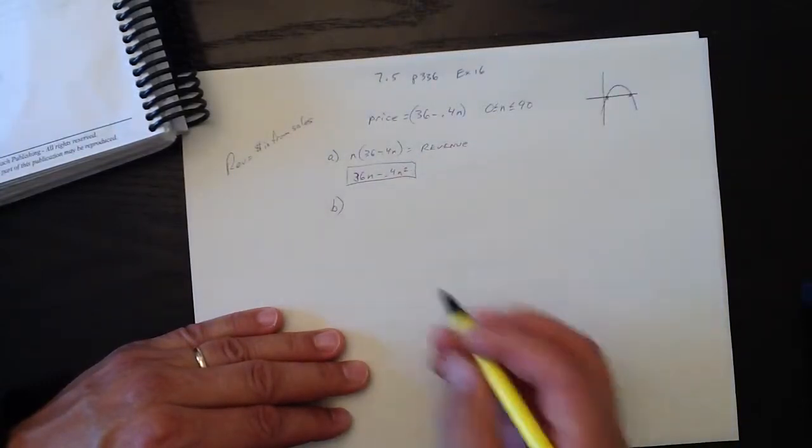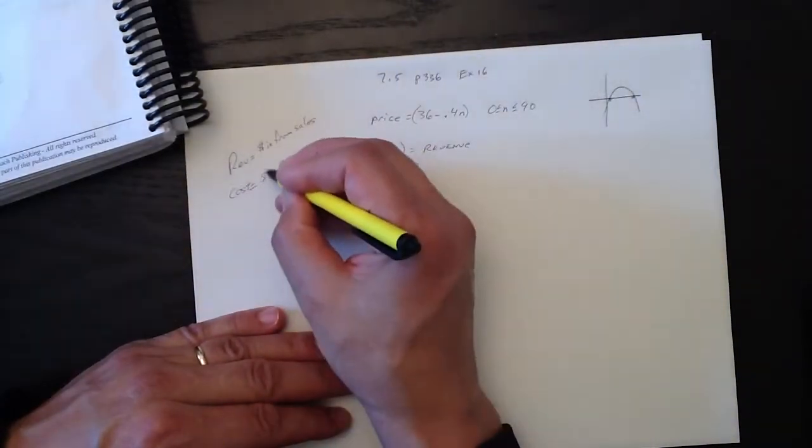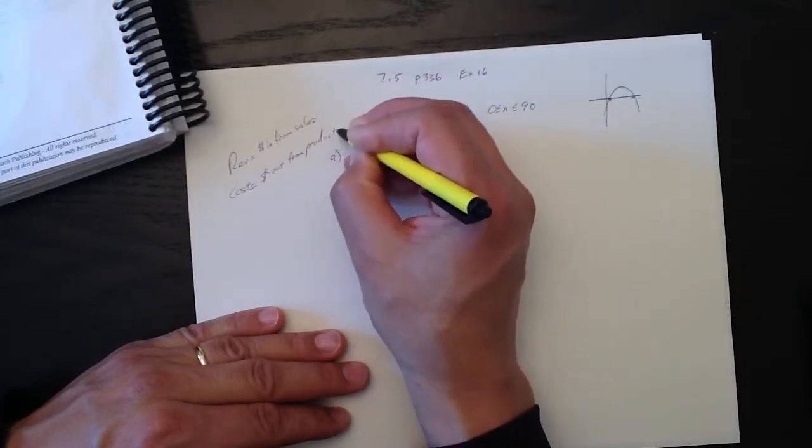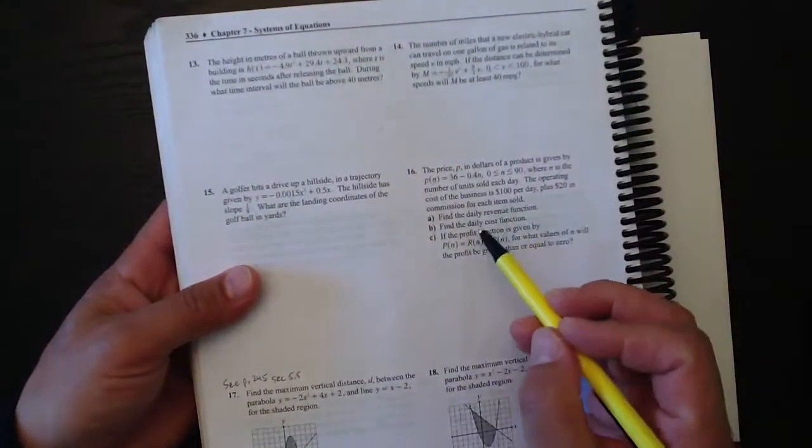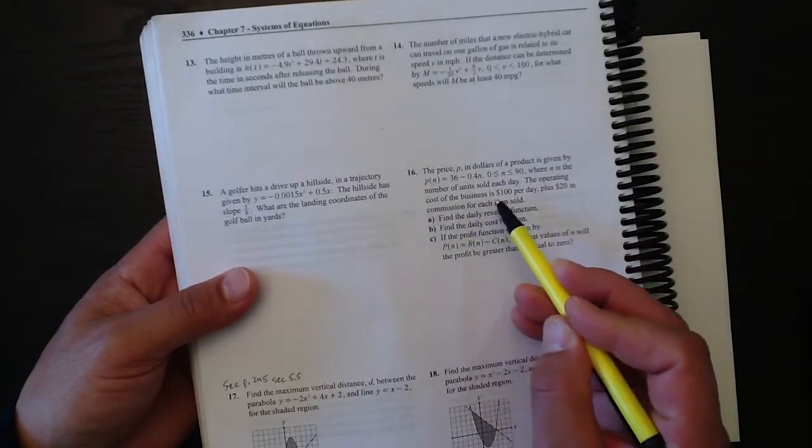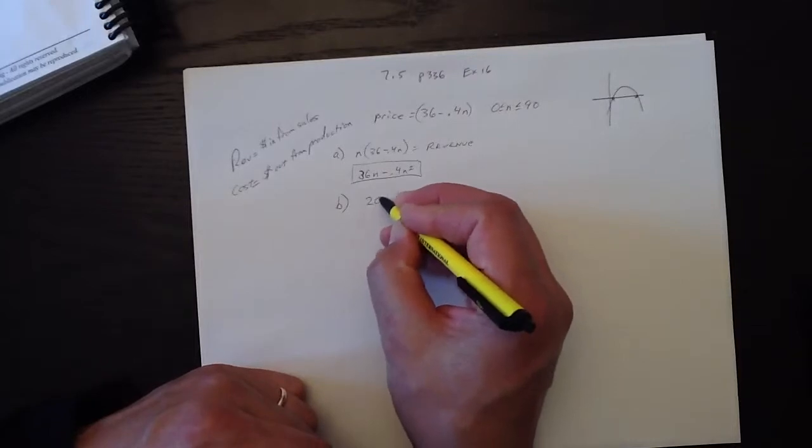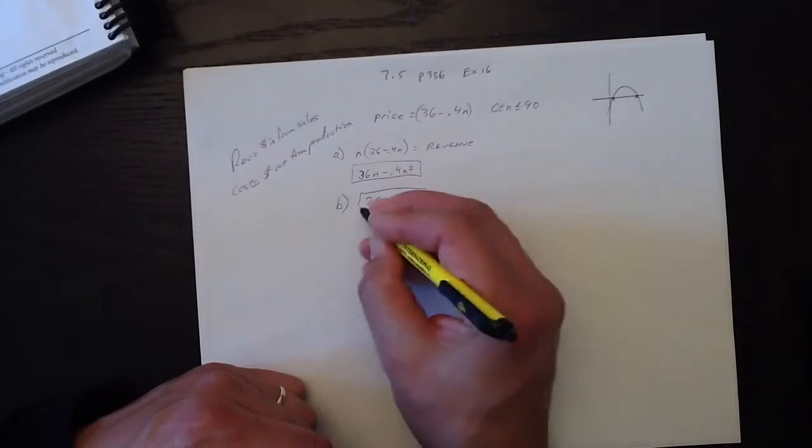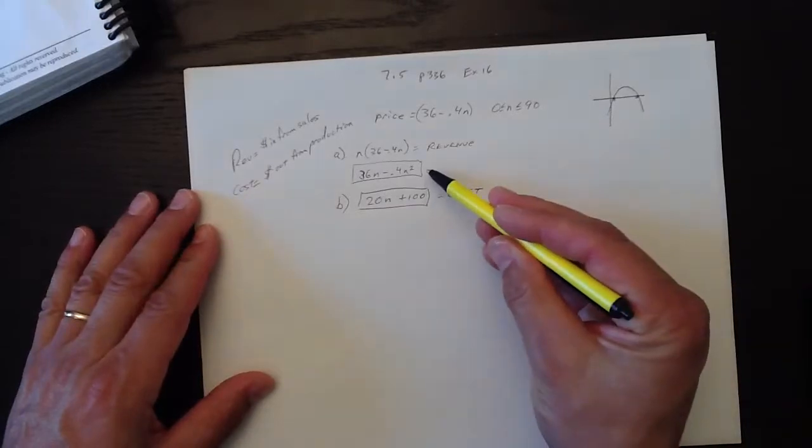For part b, our cost function. Cost equals the money out from production. It says here that the operating cost of the business is $100 per day, plus $20 in commission for each item sold. So $20 times the number sold, which was n, plus $100. That equals the cost. We have our revenue function and our cost function.